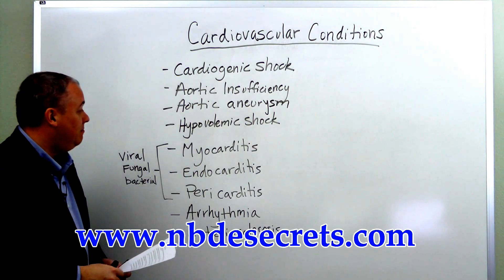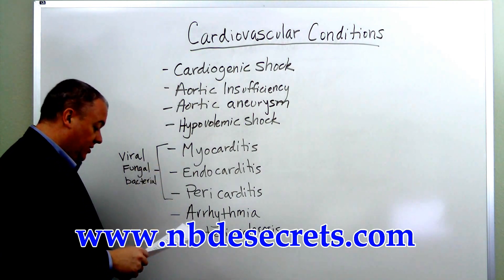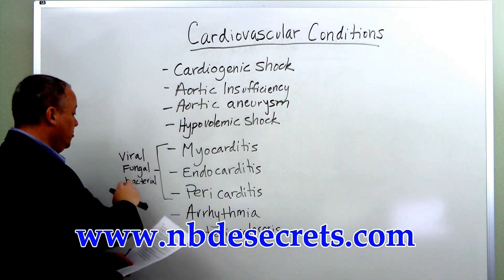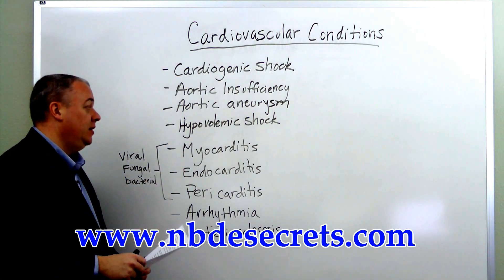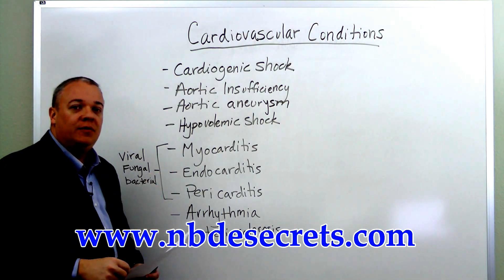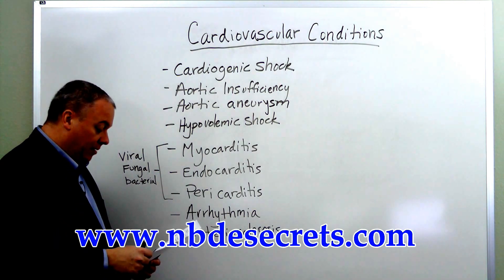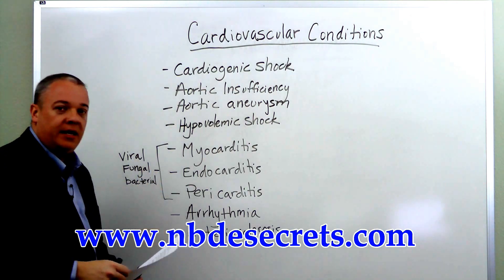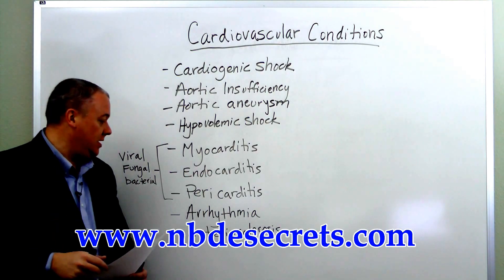Next, we have myocarditis, endocarditis, and pericarditis. These involve various inflammation problems, usually due to viral, fungal, or bacterial issues in the heart. In myocarditis, there is inflammation of the heart muscle itself. In endocarditis, there is inflammation of the internal lining of the heart, and probably the heart valves as well. In pericarditis, there is inflammation of the pericardium, the sac that surrounds the heart itself.